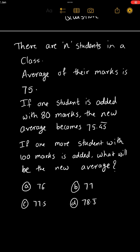There are N students in a class. The average of their marks is 75. Since average is summation X upon N, the total of their marks will be 75N.